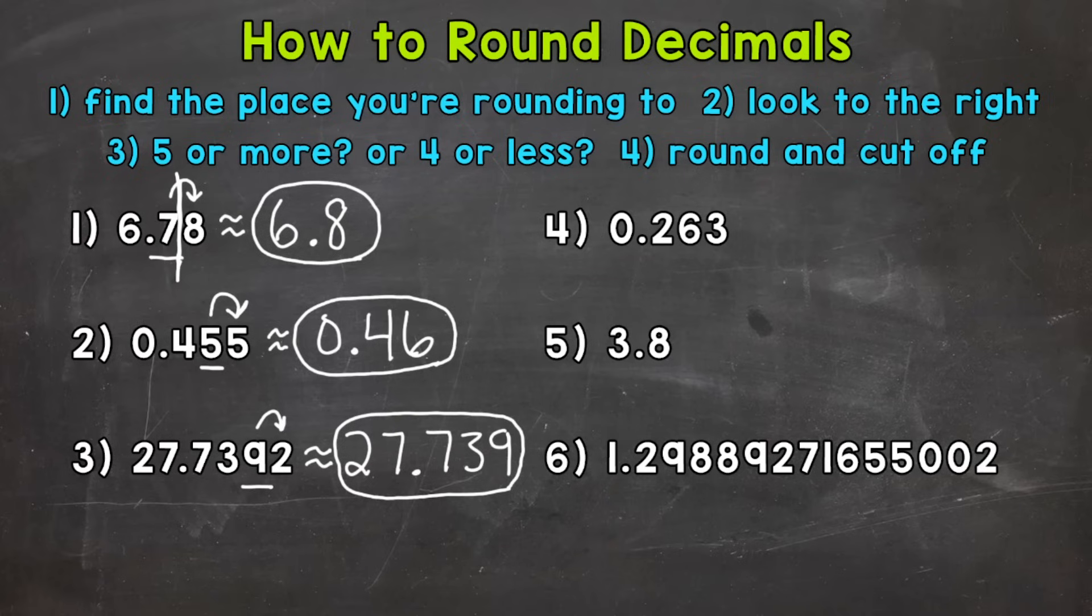Moving on to number 4. We're going to round number 4 to the hundredths place. So the 6. Let's look to the right. We have a 3. 5 or more, or 4 or less. Well, that's 4 or less, so we stay the same. And we round to 26 hundredths.